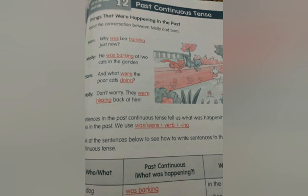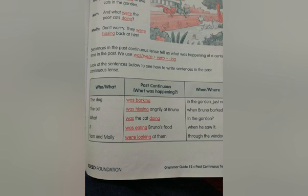Please note the words written in red — if you notice these words, you will be able to understand the sentences properly. Now, children, look at the chart from your book to see how to write sentences in the past continuous tense. This chart is very important; it will give you a proper understanding of past continuous tense.